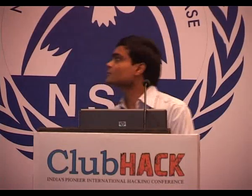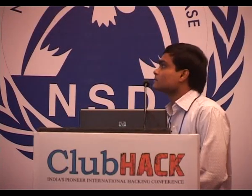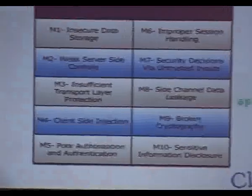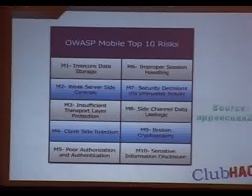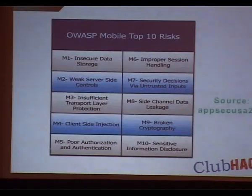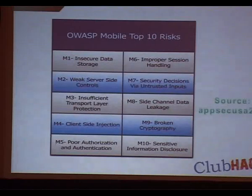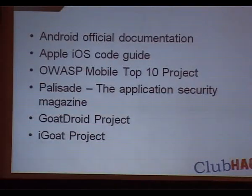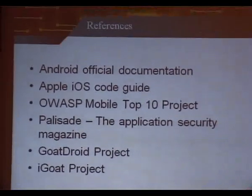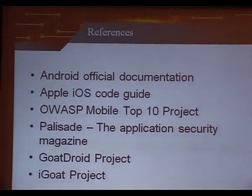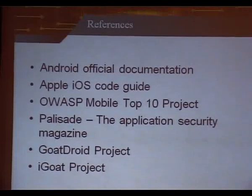These are the OWASP Mobile Top 10 risks. Insecure data storage is the first point, and insufficient transport layer protection is another. Some of the points we discussed are present in that list. Official documentation is quite good, and the OWASP Mobile Top 10 project is also very good to keep updated with.